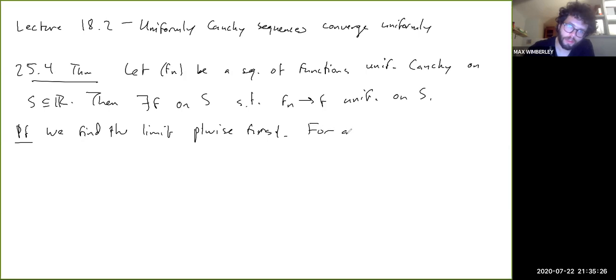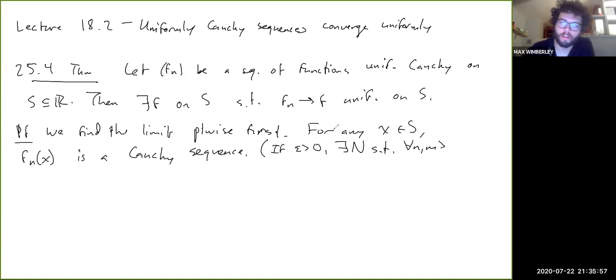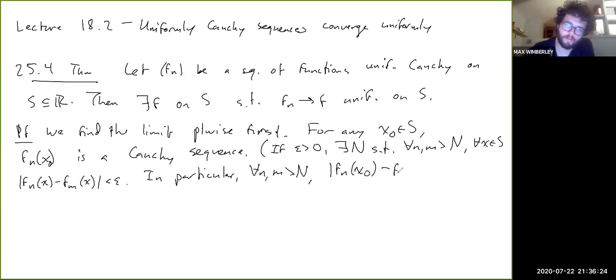So we find the limit pointwise first. For any x in S, fn(x) is a Cauchy sequence. Right, this is just because if epsilon is greater than zero, there exists a capital N such that for all n and m greater than, or let's say, let's call this one x naught. For all n and m greater than capital N and for all x in S, we have absolute value of fn(x) minus fm(x) is less than epsilon. In particular, for all n and m greater than N, we have absolute value of fn(x naught) minus fm(x naught) is less than epsilon.